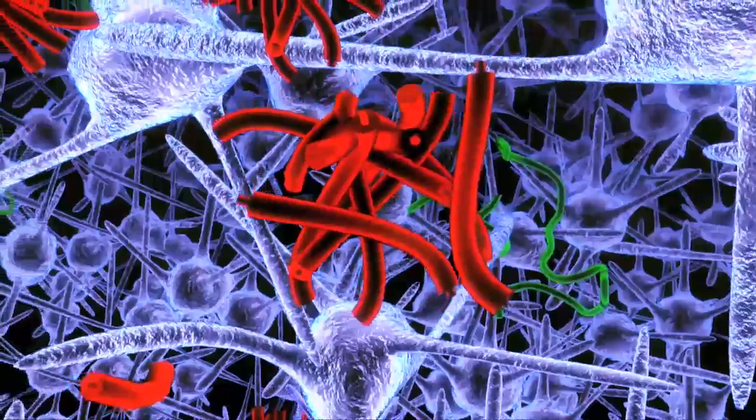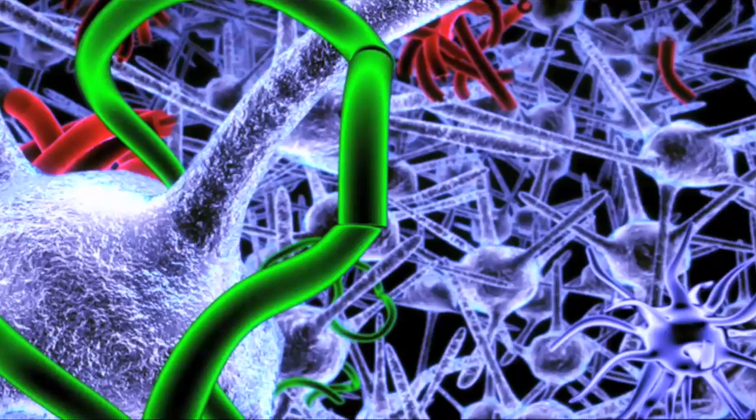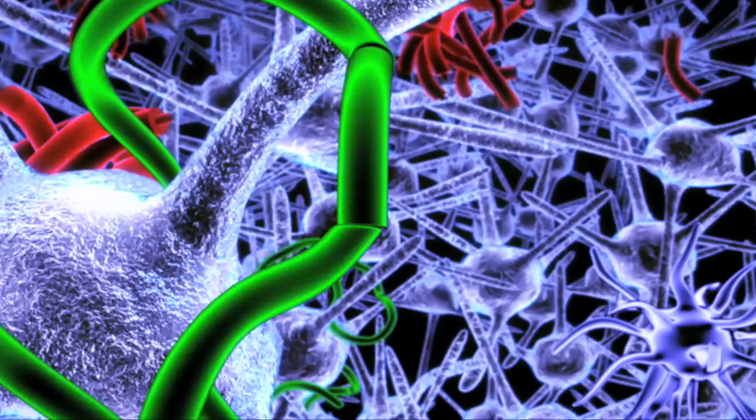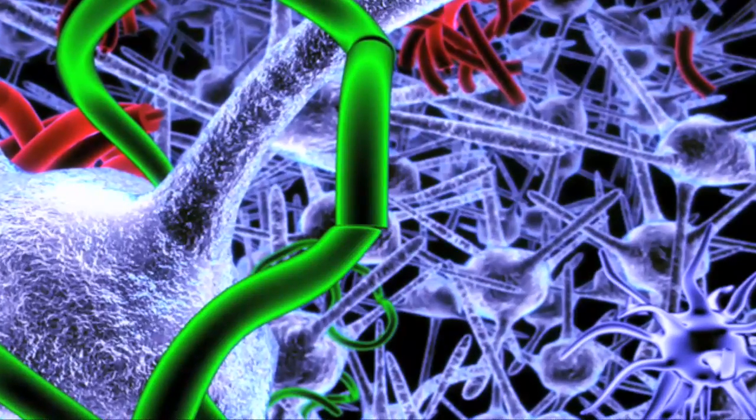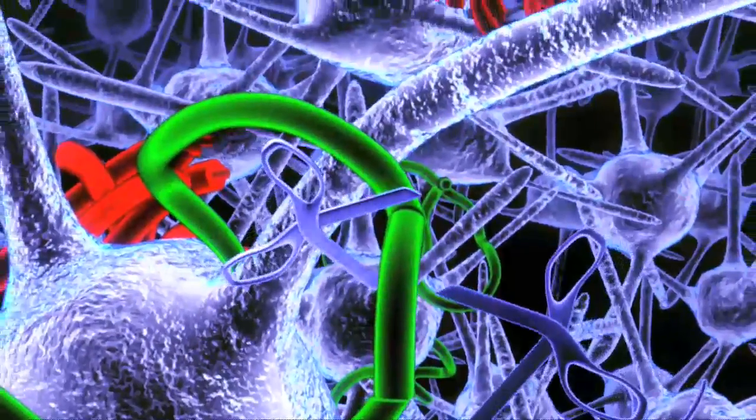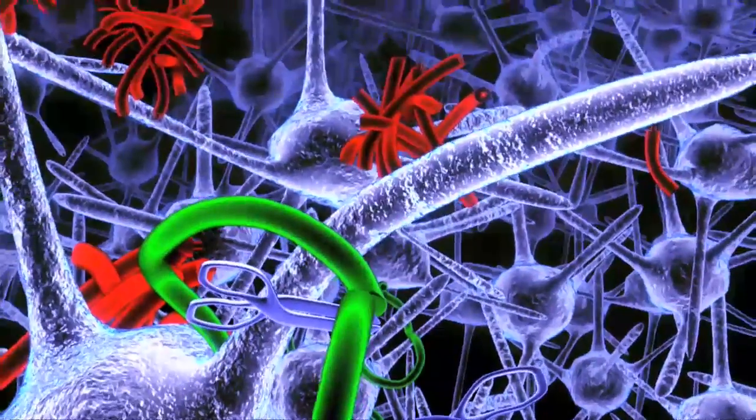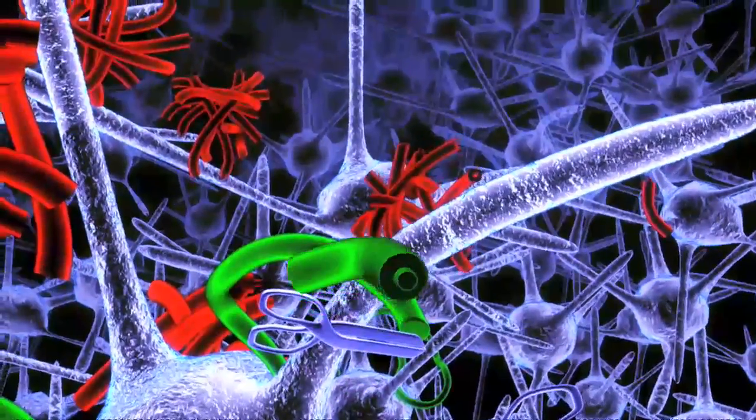A-beta is produced from a larger normal brain protein called the amyloid precursor protein, APP for short. APP is a critically important molecule present at the intersections where communications between nerve cells occur. APP is broken down when it is snipped by two cutting enzymes, producing A-beta.